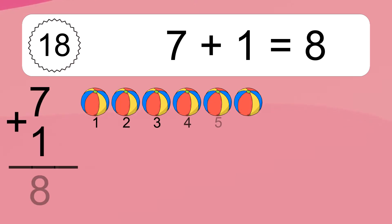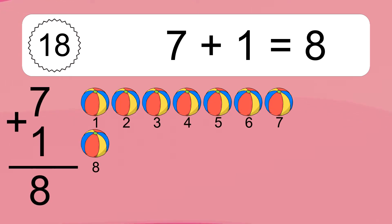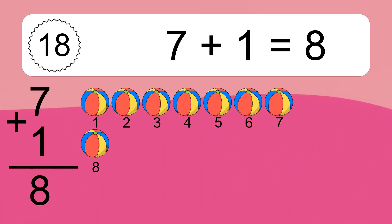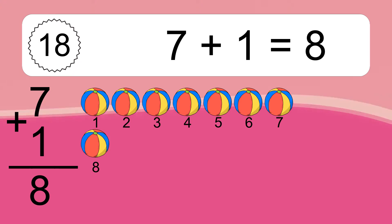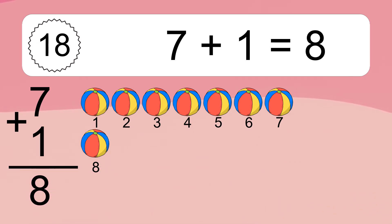7 plus 1 equals 8. Let's count it. 1, 2, 3, 4, 5, 6, 7, 8.